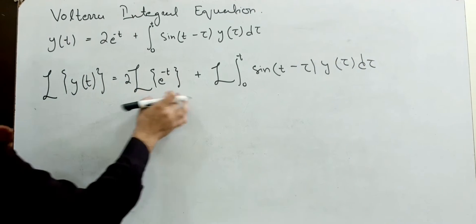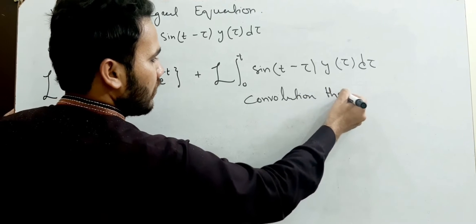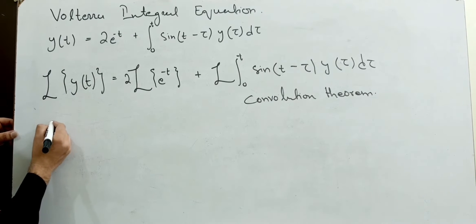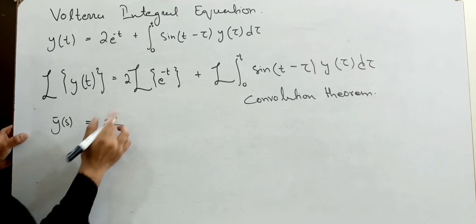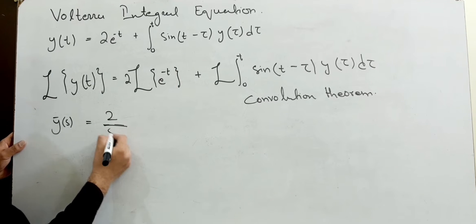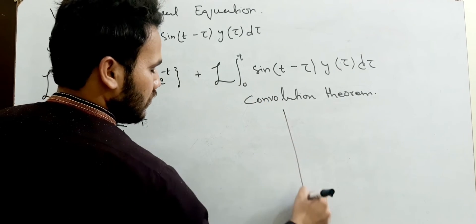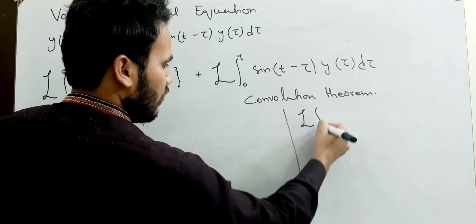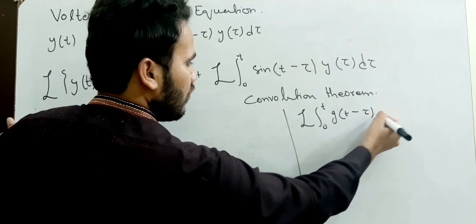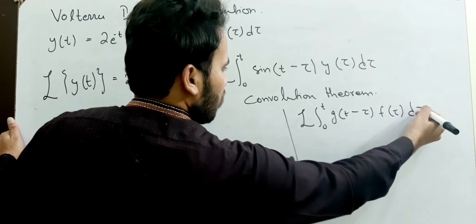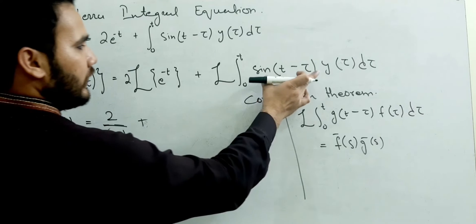Using the convolution theorem of Laplace transformation, we will have the result: y̅(s) equals 2 over s plus 1 — since the Laplace of e to the minus t is 1/(s+1). The convolution theorem states that the Laplace of the integral from 0 to t of g(t minus tau) f(tau) d-tau equals f̅(s) times g̅(s).